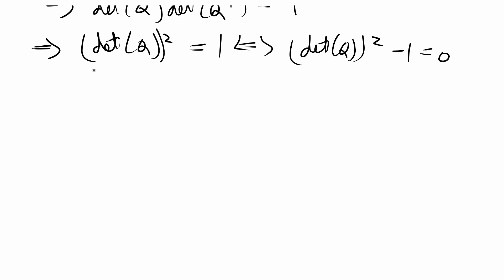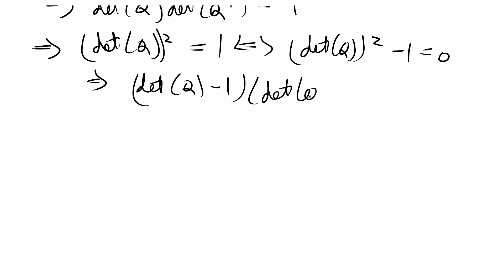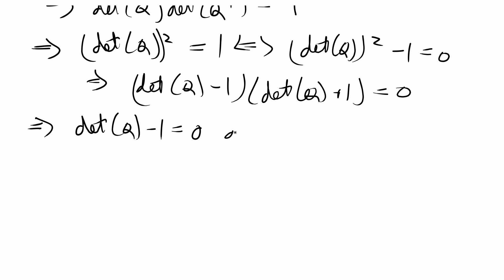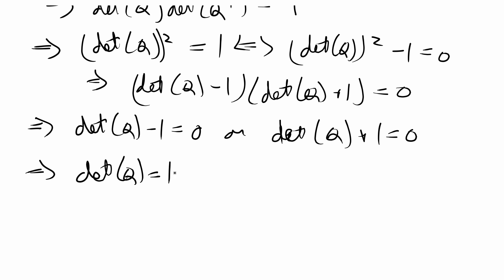This is equivalent to the determinant of Q squared minus 1 equals 0. If we think of this as a binomial expression we can factor it: the determinant of Q minus 1 times the determinant of Q plus 1 equals 0. So either the determinant of Q minus 1 equals 0, or the determinant of Q plus 1 equals 0. Therefore, the determinant of Q equals 1 or the determinant of Q equals negative 1, and we are done with this proof.